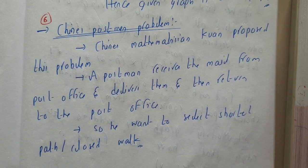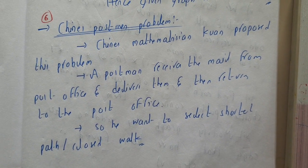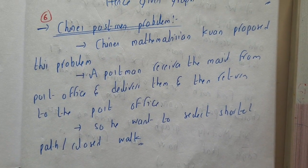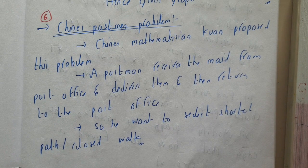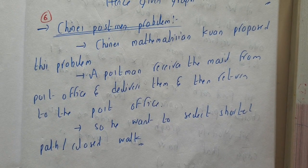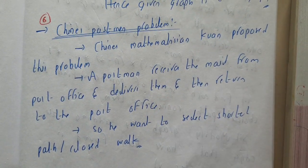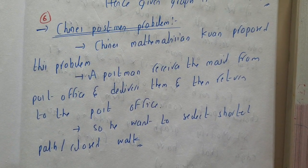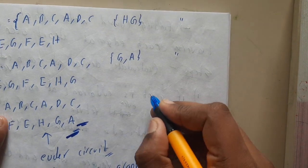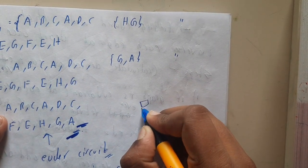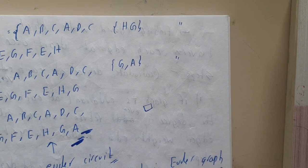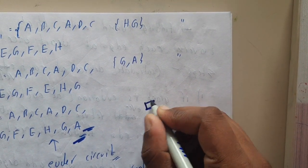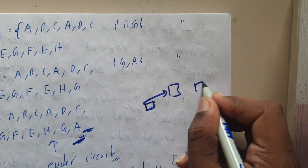Hello guys, we are back with our next lecture. In this lecture, let us go through one of the most interesting and important problems - the Chinese Postman Problem. This problem was proposed by a Chinese mathematician Khan. The main objective is that a postman at a post office will be collecting all the mails and delivering them to the addresses.